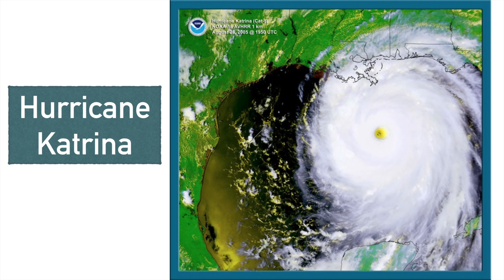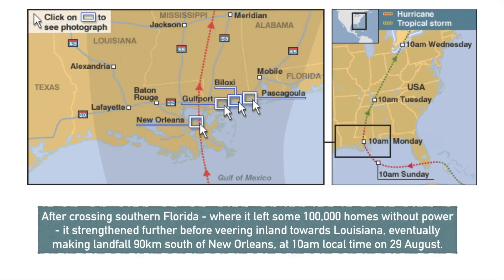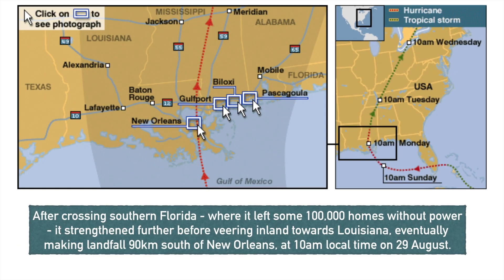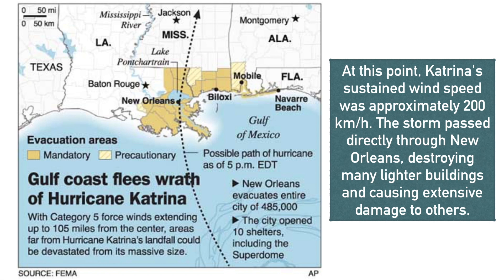In this video we're going to look at the case study of Hurricane Katrina. It was the sixth strongest Atlantic hurricane ever recorded and the third strongest to make landfall in the United States of America. It crossed Florida, where it left some hundred thousand homes without power, and then moved inland and hit Louisiana and eventually New Orleans. When it hit New Orleans the wind speed was approximately 200 kilometers an hour, which made it a category 5 hurricane.